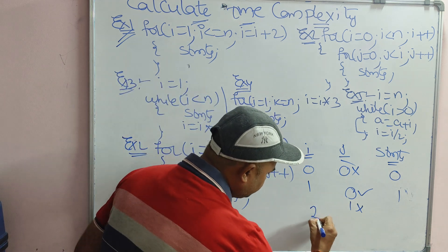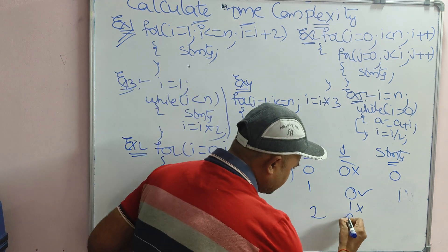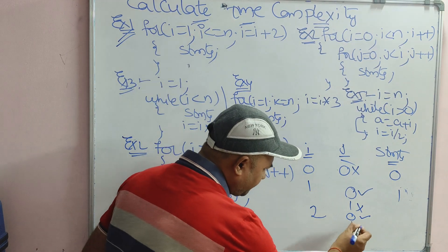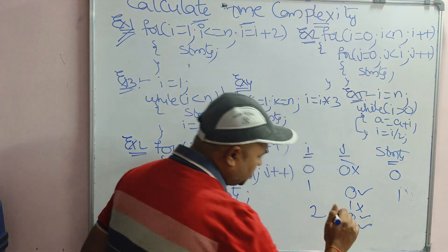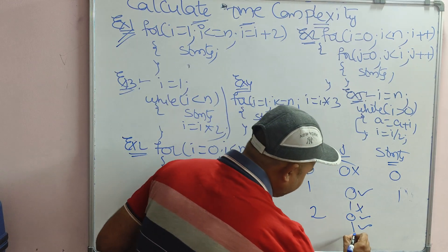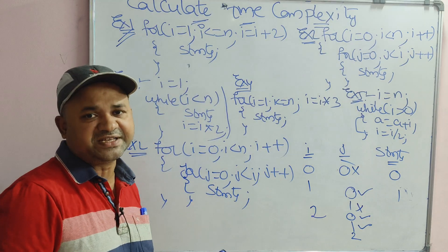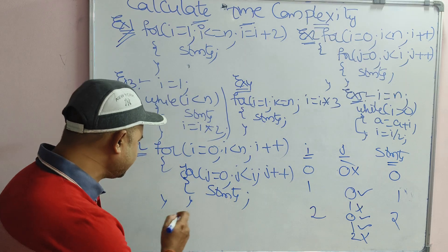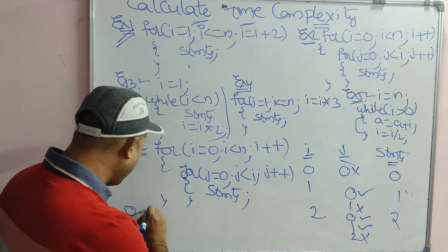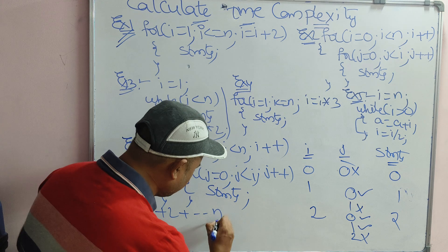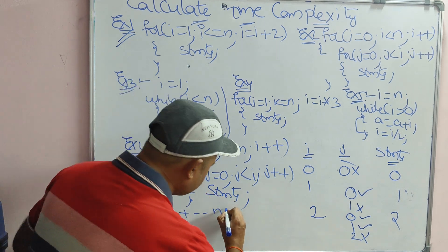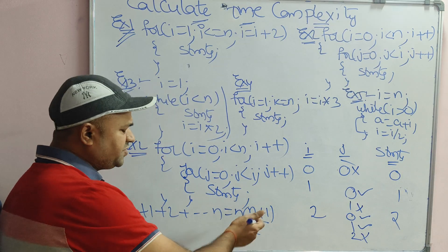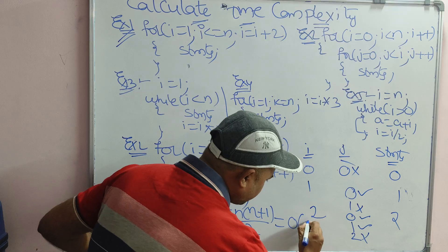When i becomes 2, j starts at 0; 0 less than 2 is true, body executes. Then j becomes 1; 1 less than 2 is true, so the statement executes twice. Then j becomes 2; 2 less than 2 is false. So the series is 0 plus 1 plus 2 and so on up to n. This is nothing but the sum of n natural numbers, with formula n(n+1)/2, which equals approximately n squared. So the time complexity is order of n square.